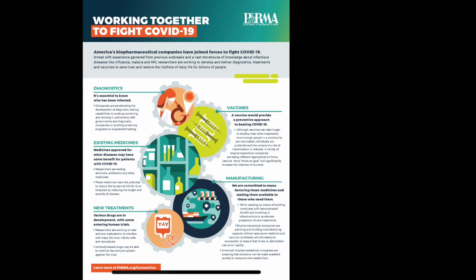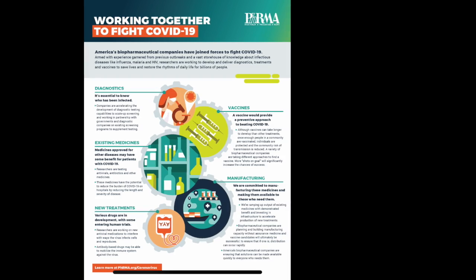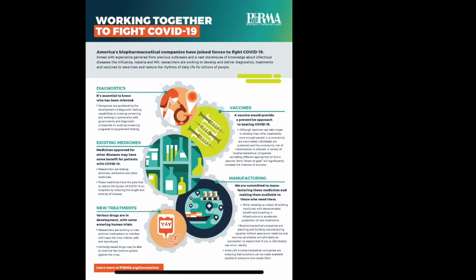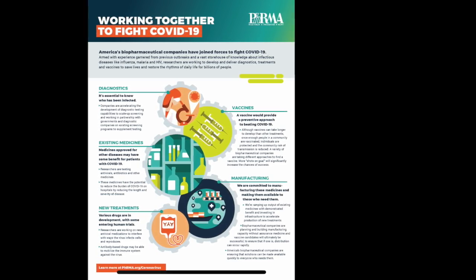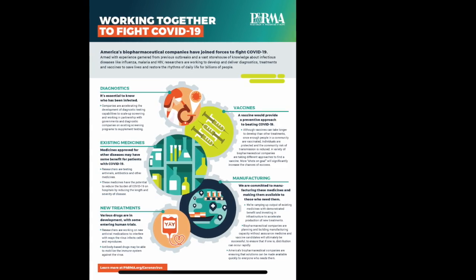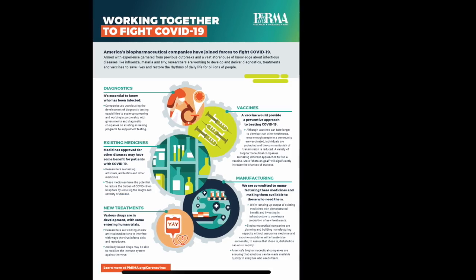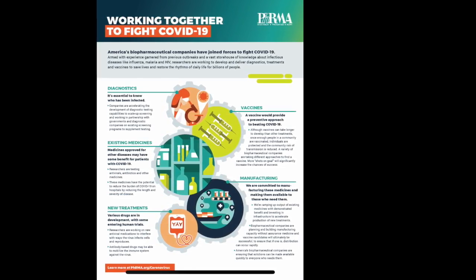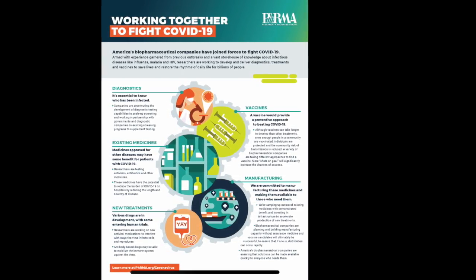My second infographic is cited from PhRMA, the Pharmaceutical Research and Manufacturers of America. They posted an infographic that was less of a PSA compared to the first one and more medically and pharmaceutically focused. It is titled 'Working Together to Fight COVID-19.' At first glance, there's a lot of information surrounding a graphic of five circular pictures which accompany the titles of each worded section. The infographic is organized into topics, but they stem from a center image rather than being organized by rows.